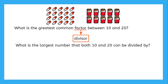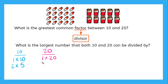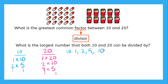We can find this by listing all of the factors for 10 and 20. For 10, we know 1 times 10 is 10, and 2 times 5 is equal to 10. And for 20, we know 1 times 20 is equal to 20, 2 times 10 is equal to 20, and 4 times 5 is equal to 20. So all of these numbers are our factors for 10 and 20. Let's write these out as lists. For 10, I have 1, 2, 5, and 10. And for 20, I have 1, 2, 4, 5, 10, and 20.